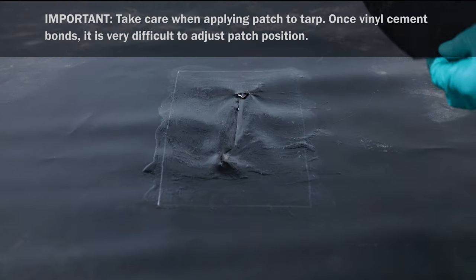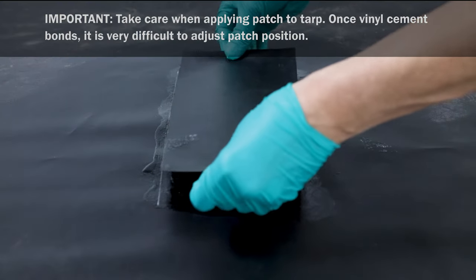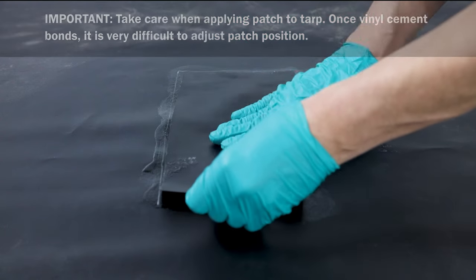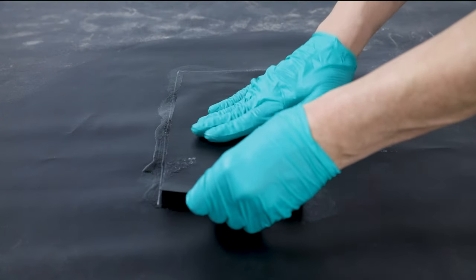Now align vinyl cement side of patch with traced outline on tarp. Then carefully apply patch in traced outline while pressing patch firmly onto tarp.